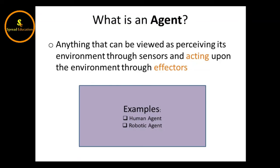Assalamualaikum everyone, welcome to my channel. Today's topic is Agent and PEAS — two topics which I have merged in this video because both are related. What is an agent? Anything that can be viewed as perceiving its environment through sensors and acting upon the environment through effectors. An agent works according to the environment through their sensors and effectors, also called actuators.